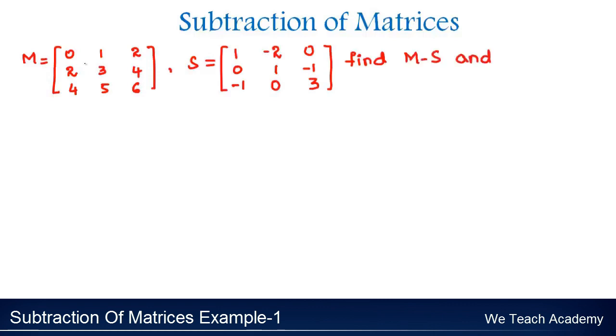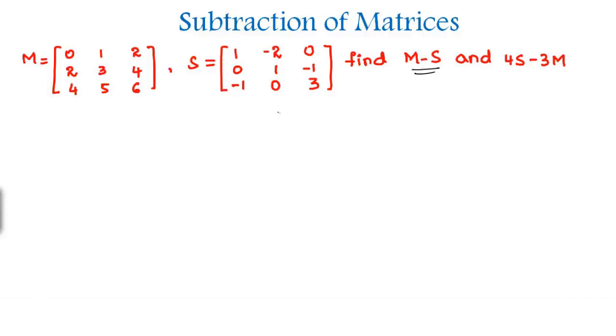So we are given with the matrices M and S and we need to find M minus S. So in order to find let us subtract the matrix S from M.